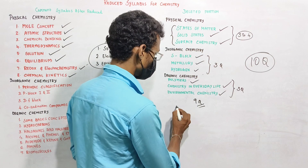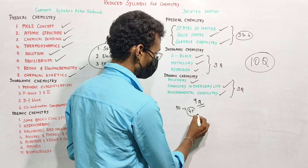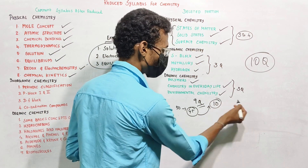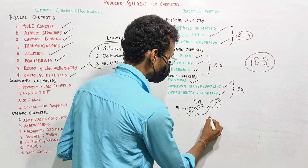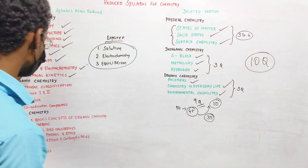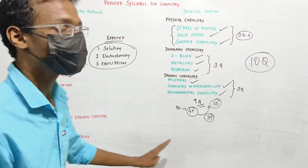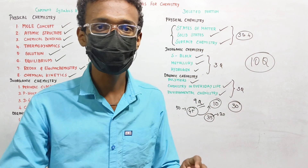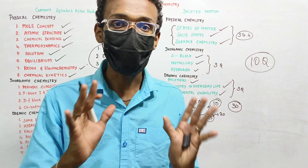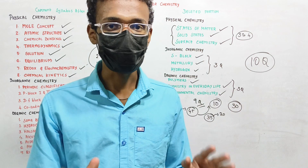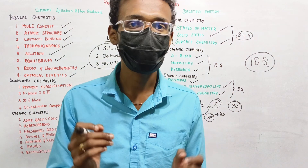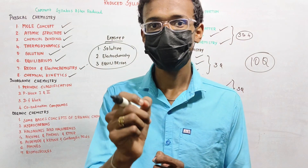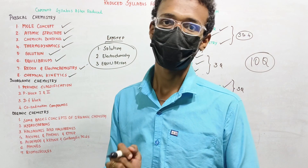The chemistry section has 45 questions total. About 10 questions you may have to guess. That leaves 35 questions. Among those, around 20 theory questions are easy. So if you are an average student, you can target 30 questions comfortably.